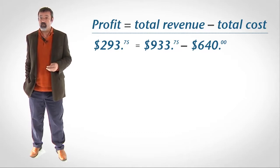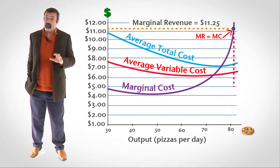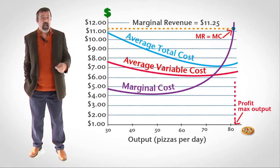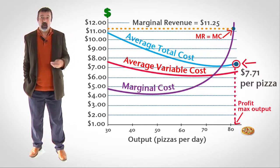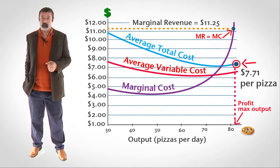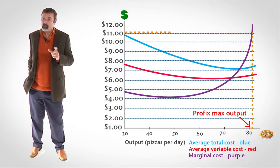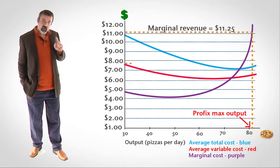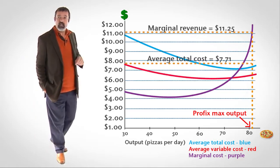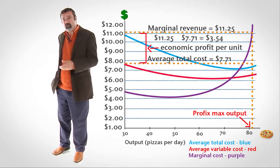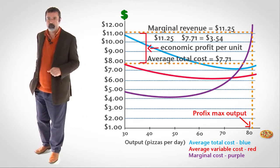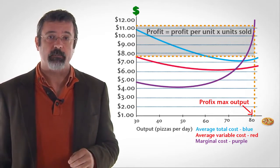We can also find this information on the graph. Follow 83 up to the average total cost curve to find the firm's average total cost of $7.71 per pizza. If the firm is selling its pizza for $11.25 each, and they cost on average $7.71 each to produce, then the firm is earning an economic profit of $3.54 per pizza on average. The shaded area represents the firm's economic profit.